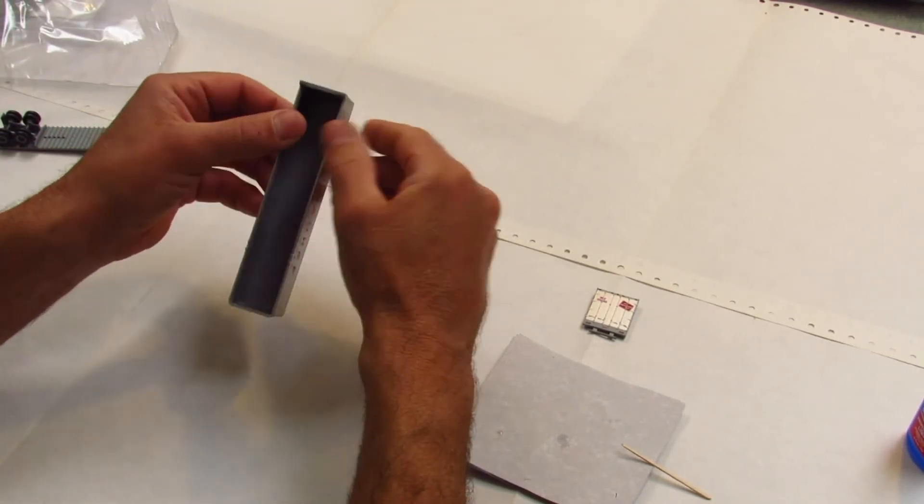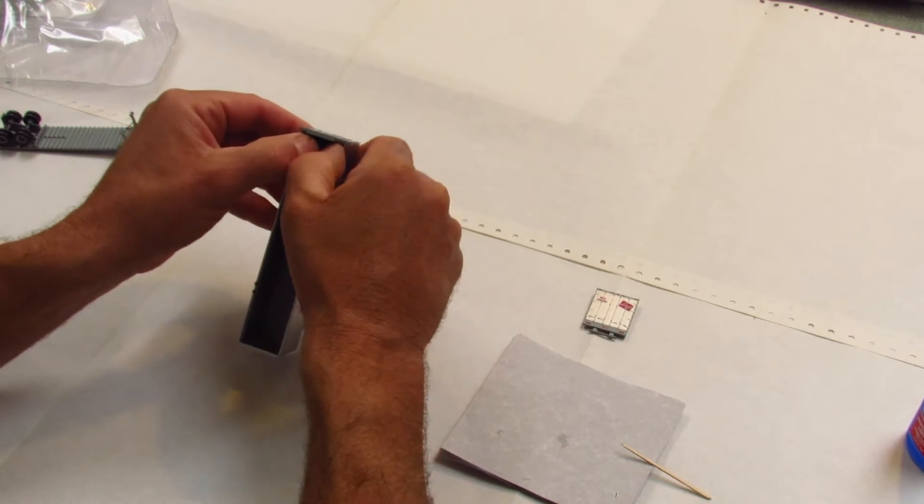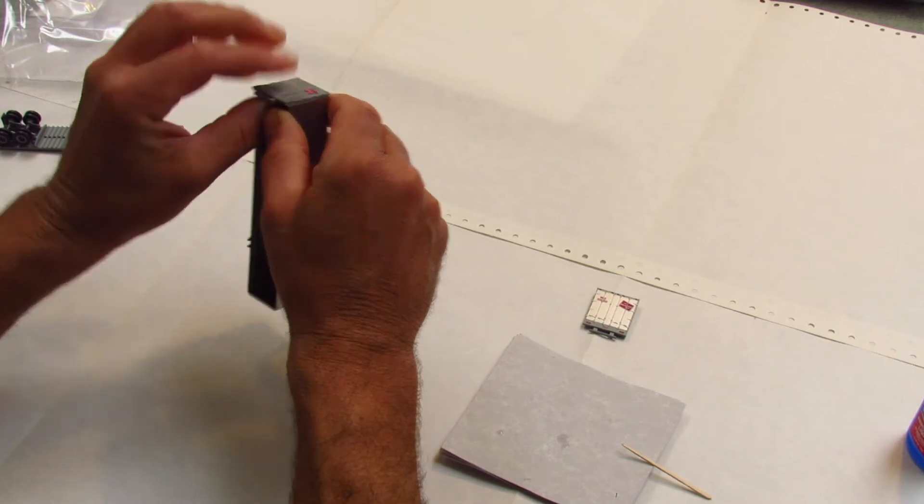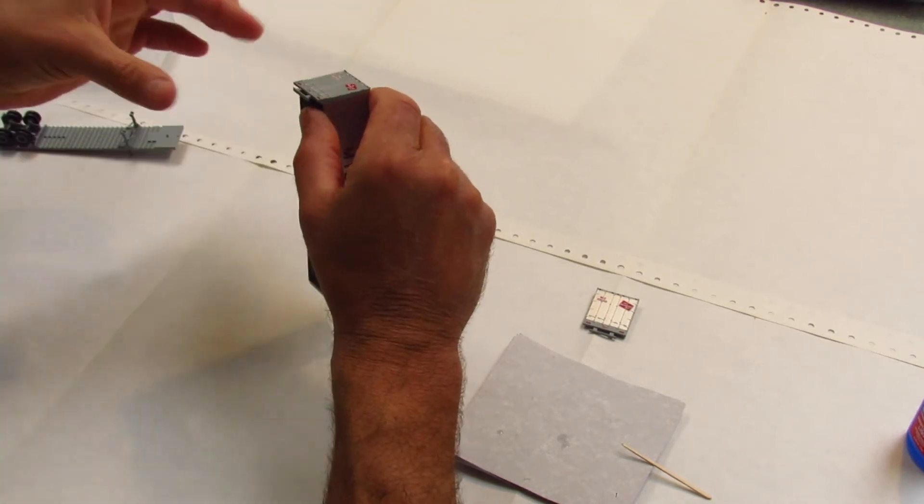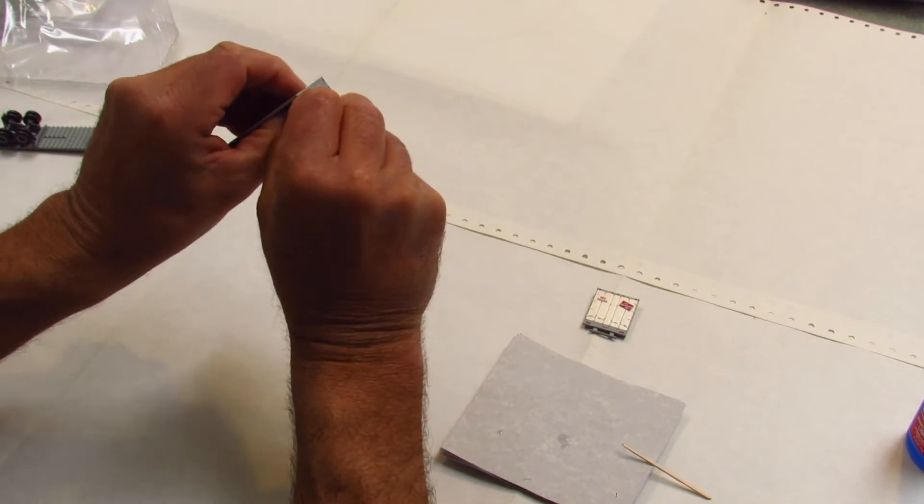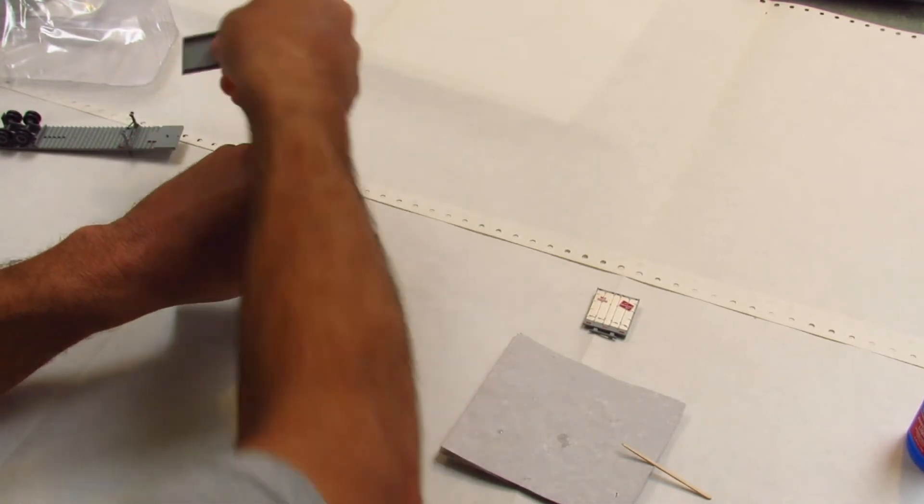To remove the door, put both thumbs inside, spread the sides. One side will give out before the other. Once that gives out, roll the door in this direction. Once you roll that out, the top's free. Now you can do the other side and the door should come out.